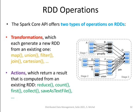The Spark Core API offers two types of operations on RDDs. The first kind are called transformations, which generate a new RDD from an existing one. Typical transformation operations include map, union, filter, join, and Cartesian product. By using these transformations, you can implement your envisioned algorithm.